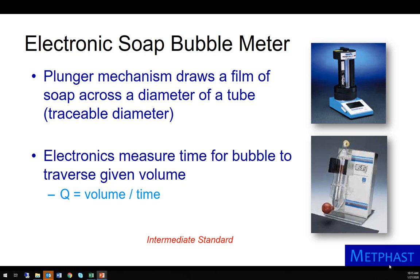Electronic soap bubble meters are also available. A plunger mechanism draws a film of soap across the base of a cylinder tube with a traceable diameter. Electronics then measure the time for the bubble to traverse the height of the cylinder, and the air flow is calculated as the volume traversed by the bubble divided by the time to traverse that volume. This is known as an intermediate standard because the electronics are involved in determining the traverse time.